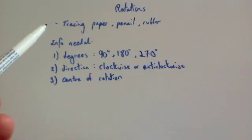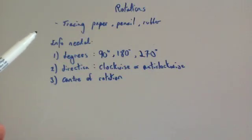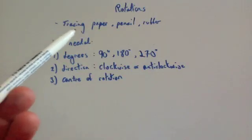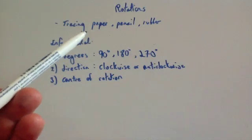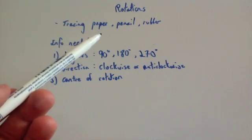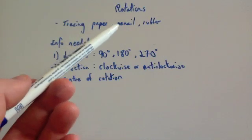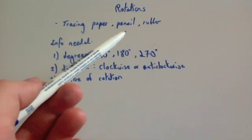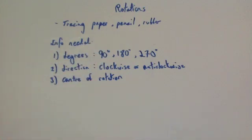In this video we're going to look at how to do a rotation. You're going to need some equipment: you're going to need some tracing paper. In the exam if you don't have that given to you, you can put your hand up and ask for some. And a pencil and a rubber.